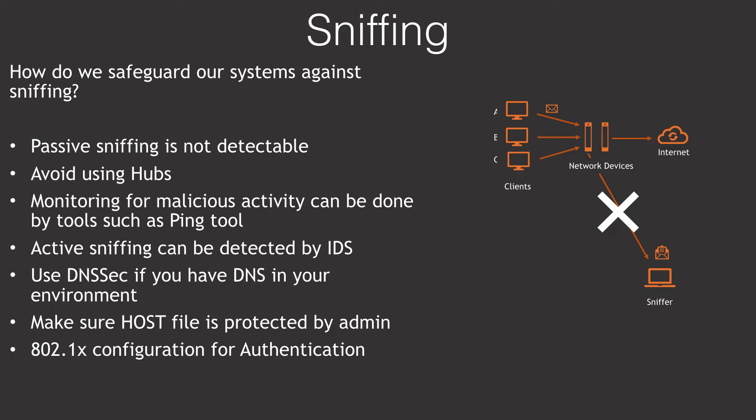Here are certain things you can apply to protect your network against sniffing. Passive sniffing, due to its discreet nature, is not often detectable — so avoid using hubs. Monitoring for malicious activity can be done by tools such as the ping tool, although for modern networks the ping tool may not be as useful. If you still have legacy network connections, you can use the ping tool. Active sniffing can be detected by IDS or IPS systems.